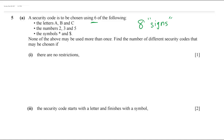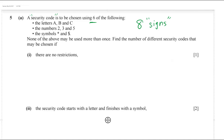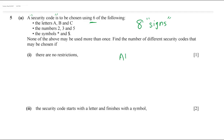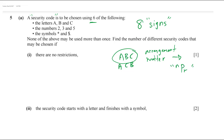The first thing you need to determine is: does arrangement matter? For a security code, arrangement is very important. For example, ABC and ACB are totally different codes — you can't unlock an iPhone set to ABC by entering ACB. So when arrangement matters, you use nPr (permutation). When arrangement does not matter, you use nCr (combination). This is a permutation question.